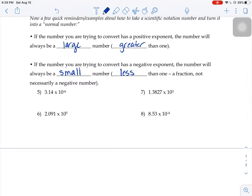So I'm going to try 5 and 6, then you're going to try 7 and 8. When you see 3.14 × 10⁻⁶, the negative is telling you this is a small number. You have to make it less than 1. In other words, our decimal is going to be moved to the left.